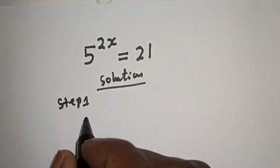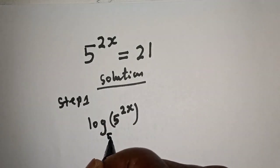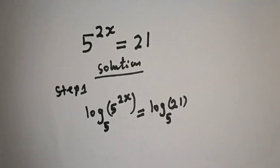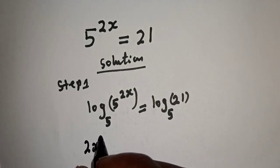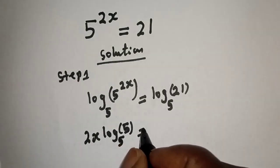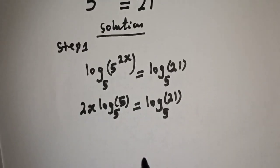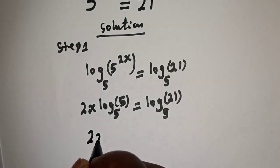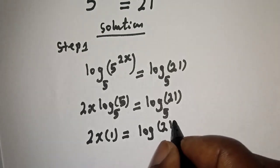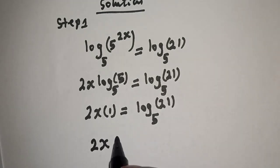Solution. Let's start with step one. Let's take the log of both sides with base 5: log of 5 raised to power 2x, base 5, is equal to log 21 base 5. And here we bring down 2x: log 5 base 5 is equal to log 21 base 5. Now log 5 base 5 is 1, so 2x multiplied by 1 is equal to log 21 base 5.